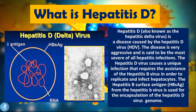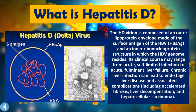Therefore, the disease can only occur in a currently infected or previously infected hepatitis B positive patient. The hepatitis D virion is composed of an outer lipoprotein envelope made of the HBV surface antigen, and an inner ribonuclear protein structure in which the HDV genome resides. Its clinical course may range from acute self-limited infection to acute fulminant liver failure. Chronic liver infection can lead to end-stage liver disease, with complications including accelerated fibrosis, liver decompensation, and hepatocellular carcinoma.